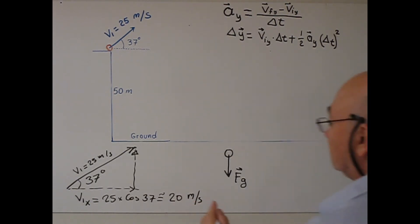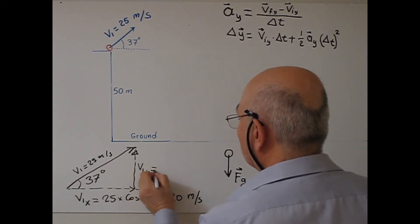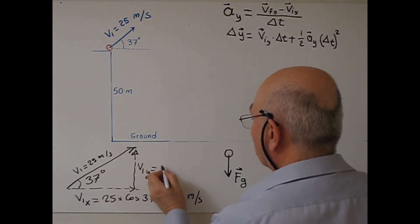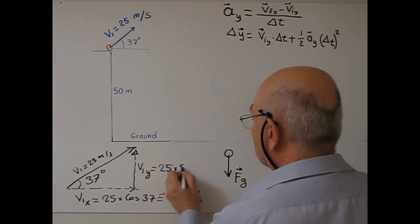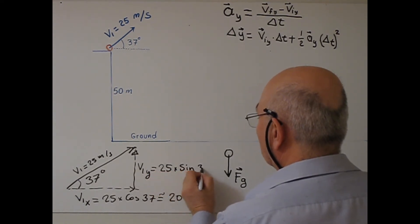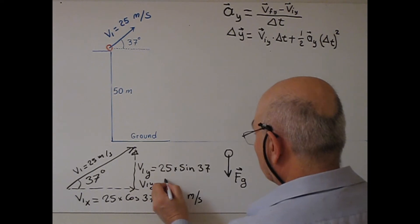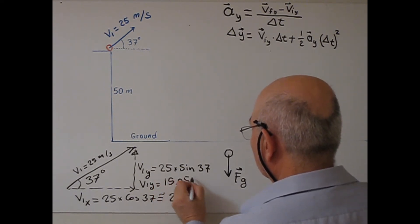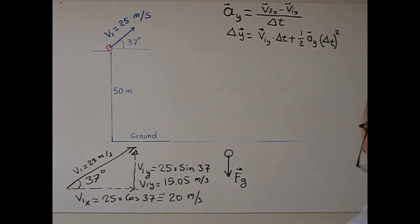Vertical component, V1y will be okay. So, 25 times sin 37, so V1Y will be 15.05 meter second.